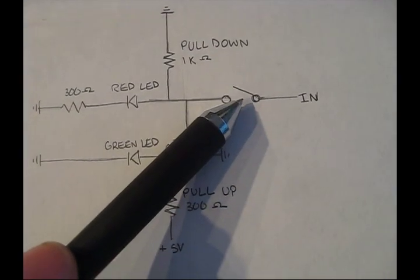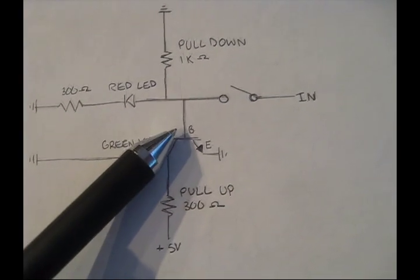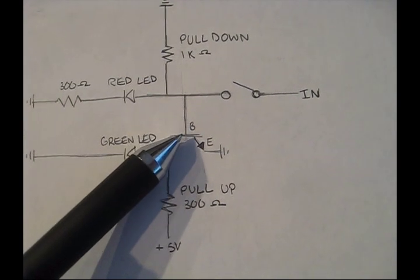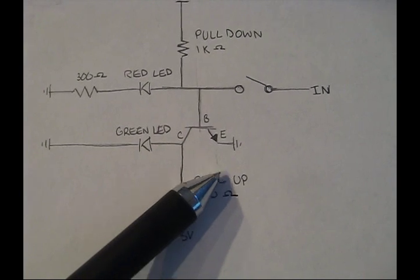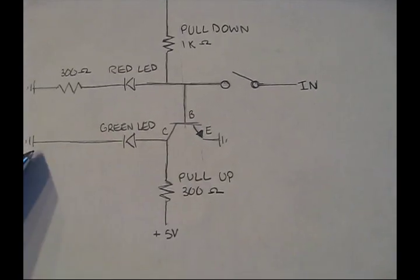So when the switch is open, there is no current to the base of the NPN transistor, and that lets current flow directly from the plus 5 volts of the pull up resistor through the green LED to ground.